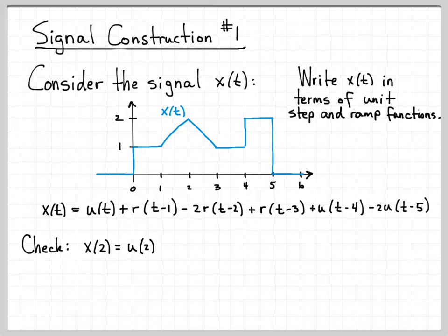For instance, let's go ahead and compute based on our equation what x(2) is. So I'm going to let t equal two. So this will be u(2), and this will be plus r(1). When t is two, two minus one is one. And this will be minus 2 times r(0) plus 3 times r of a time minus one. Two minus three is a negative one. Plus u(-2) minus 2u(-3).